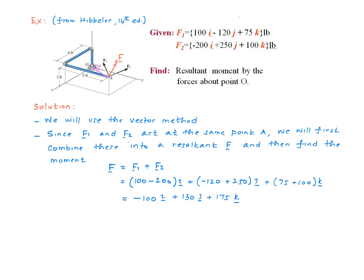Now we need to define our R vector. The R vector goes from the point where we want to take the moment from, which is point O in our case, to a point that is on the line of action of the force.